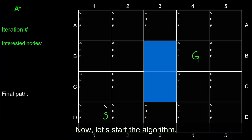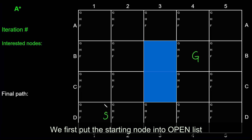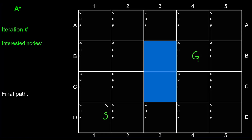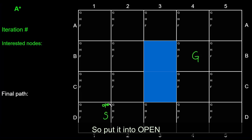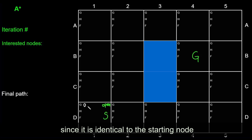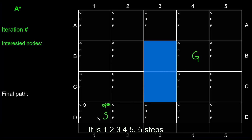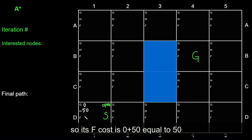Now let's start the algorithm. We first put the starting node into the open list and update its cost values. Its g cost is zero, since it is the starting node. Its h cost is the distance from this node to the target node — five steps, so 50. The f cost is zero plus 50, equal to 50.